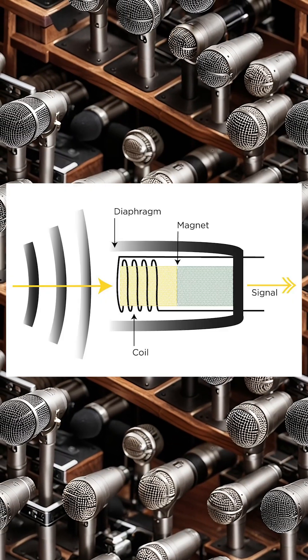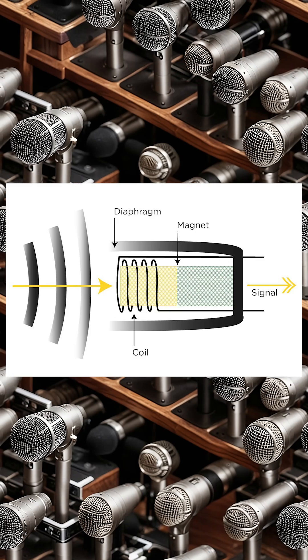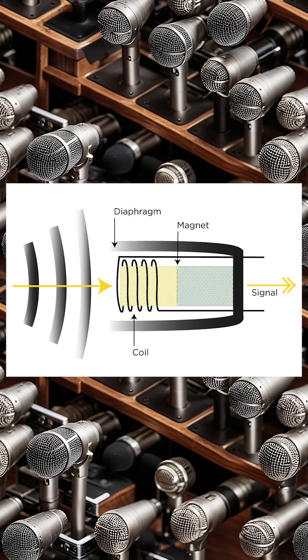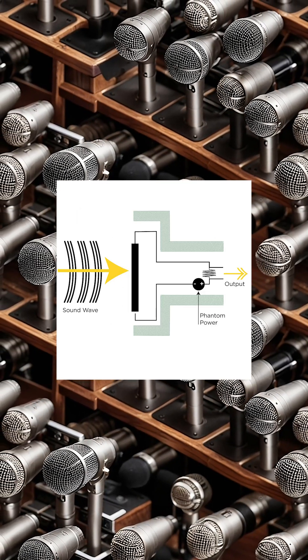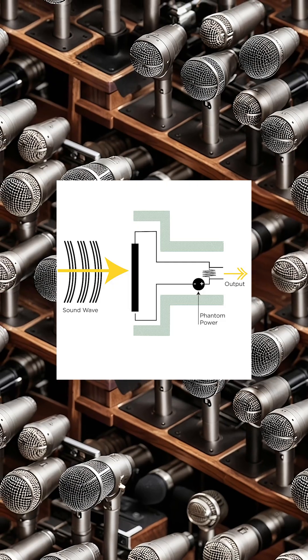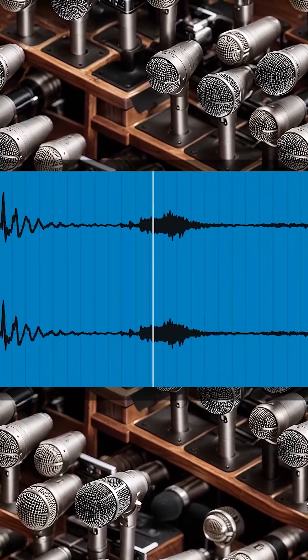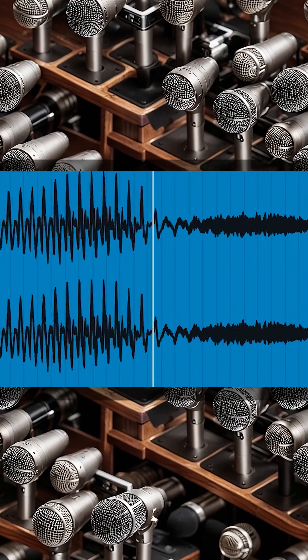These vibrations cause either a coil of wire to move within a magnetic field or a charged backplate to react, depending on the type of microphone. This creates an electrical signal that mirrors the original sound wave.